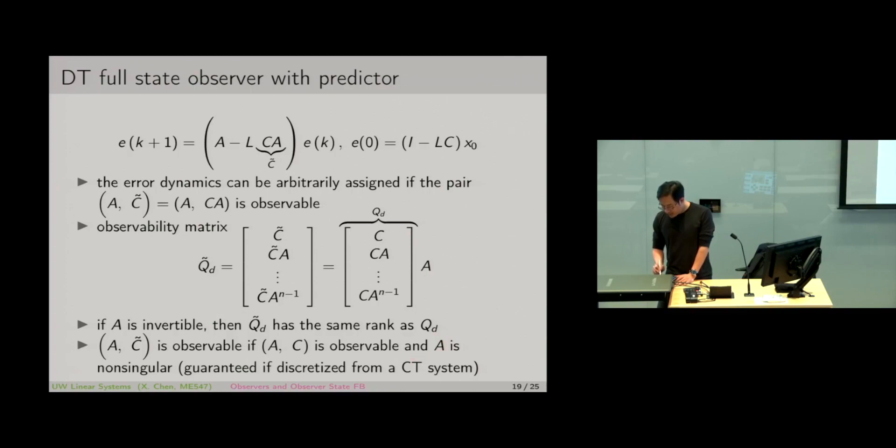if we have a continuous time A matrix and then we discretize it—we talked about how to discretize a state equation—the discretized state equation A_D becomes e^(A*ΔT).